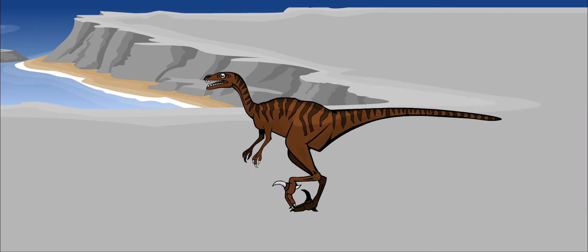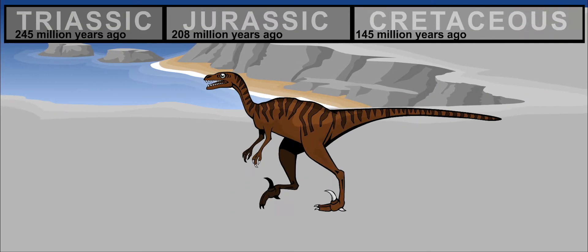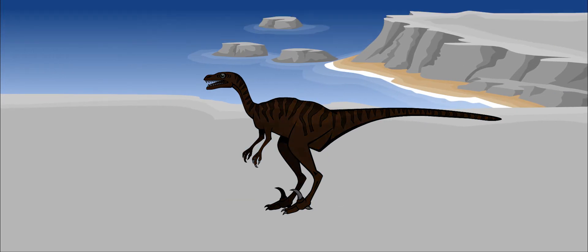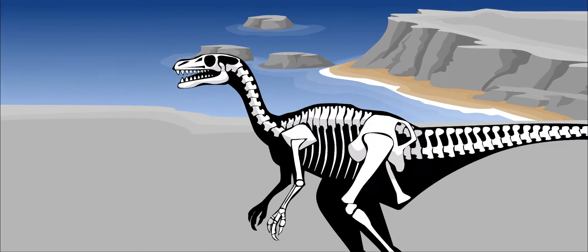Velociraptor lived about 80 million years ago. It was one of the most intelligent dinosaurs that we know about. We know this from the large space in its skull for a brain.